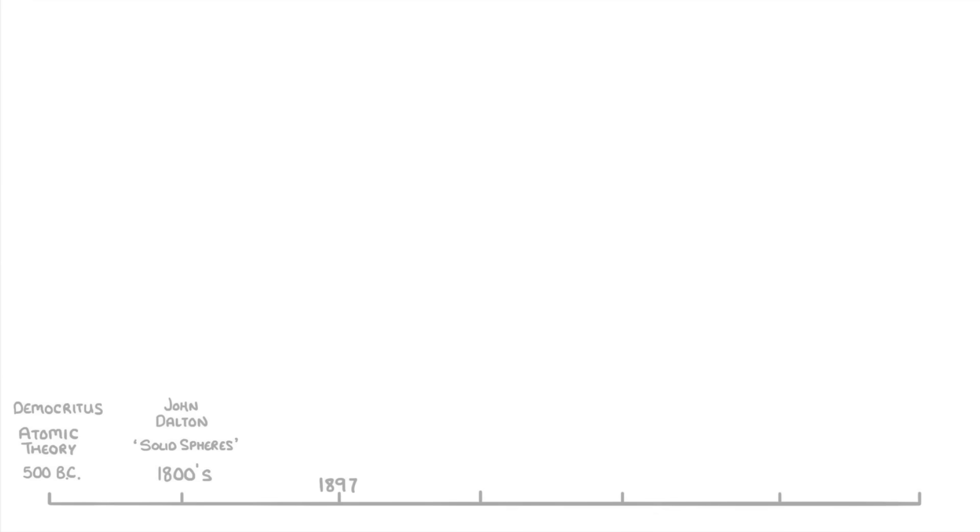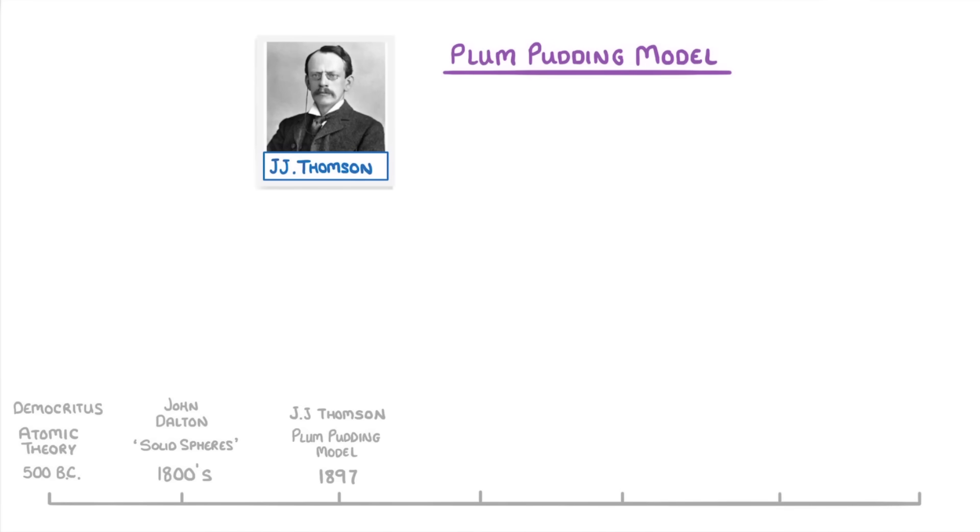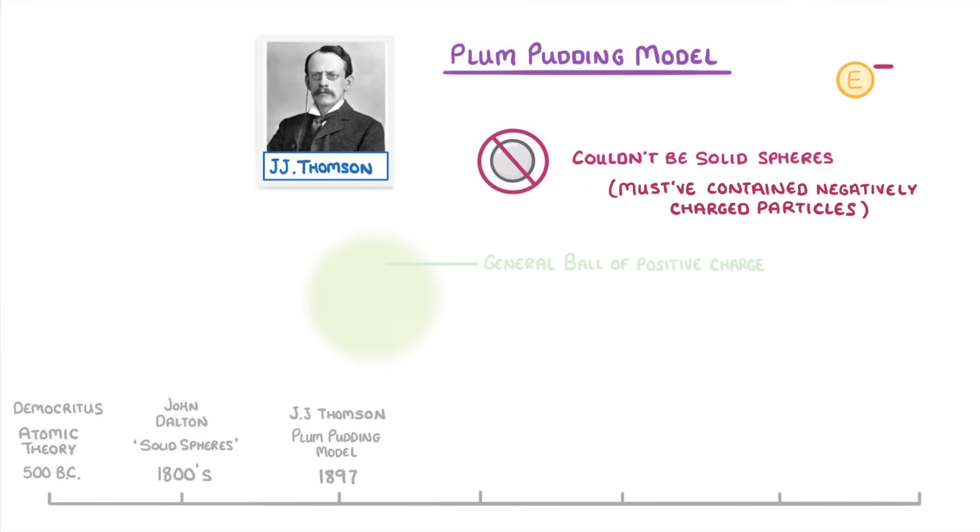A short while later, in 1897, JJ Thompson came up with the plum pudding model. He had done a series of experiments which showed that atoms simply couldn't be solid spheres, and instead that they must have contained negatively charged particles, which we now know to be electrons. So using this new evidence, he proposed that the atom was a general ball of positive charge with discrete electrons stuck in it.